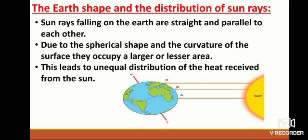See, we can see from the diagram. Near the equator, the rays are very strong. But on the poles, the heat level is less.